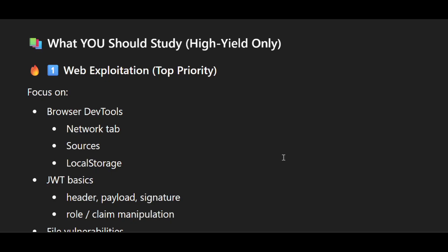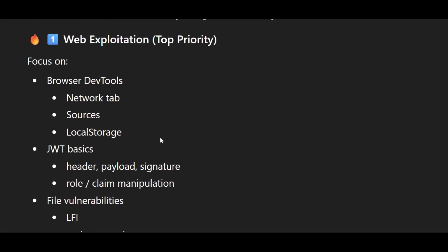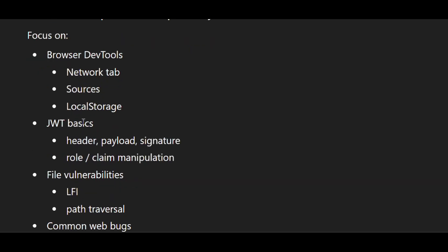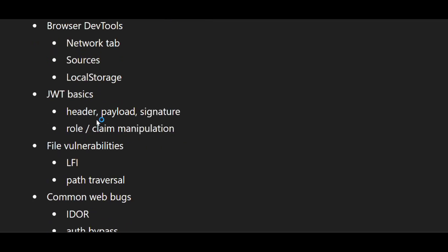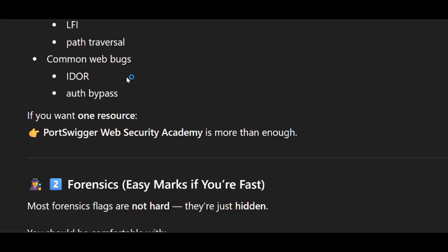The top priority is web exploitation — it is very, very important. You must focus on browser developer tools like the network tab, sources, and local storage. You must focus on JWT basics — JSON web tokens — specifically header, payload, signature, role and claim manipulation. Then file vulnerabilities like LFI — local file inclusion — path traversal, and common web bugs like IDOR or auth bypass.